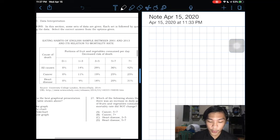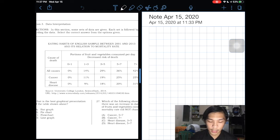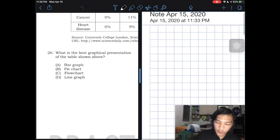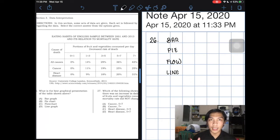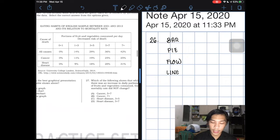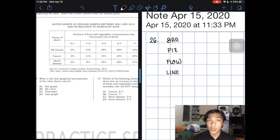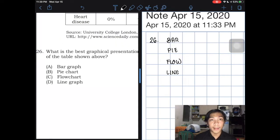Eating habits of English sample between 2001 and 2003 and its relation to mortality rate. Number 26, what is the best graphical presentation of the table shown above? So we were given 26, we are given a bar, a pie, a flowchart, and then a line graph. Based on the table given above, makikita mo each row is not equal to 100% and each column is not correlated with each other. So immediately, you can remove the pie chart.